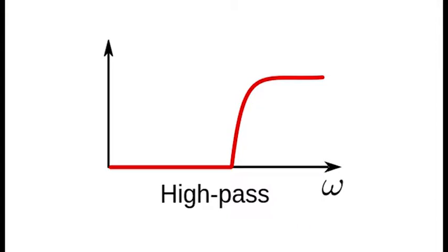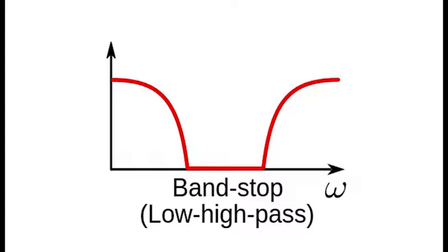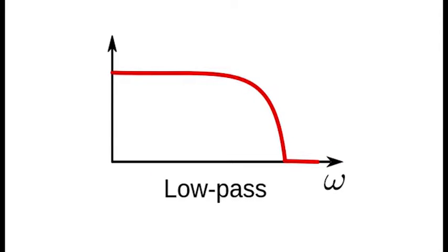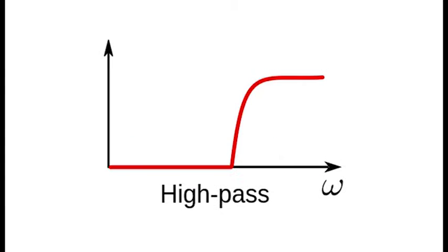A band stop filter removes a range of frequencies and keeps the rest, while a band pass allows the desired range and removes the other frequency components. In contrast, low pass filters allow frequencies below a certain cutoff, and high pass filters allow any frequency above the cutoff to pass through.